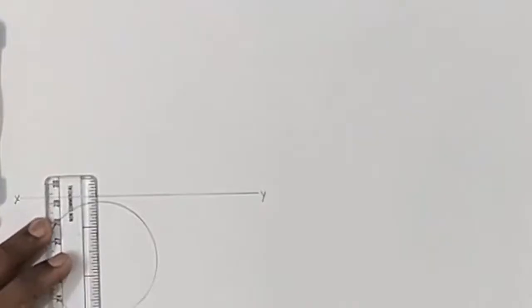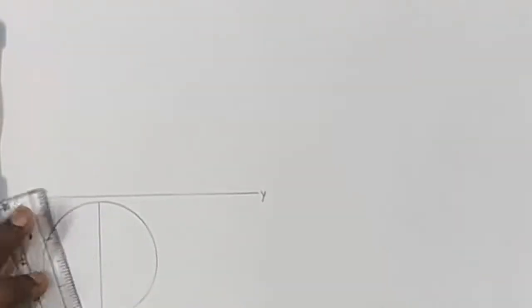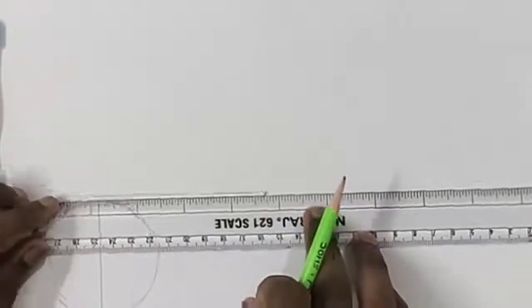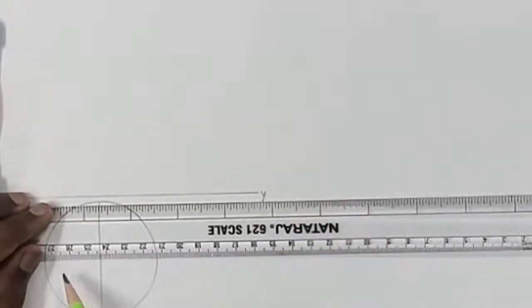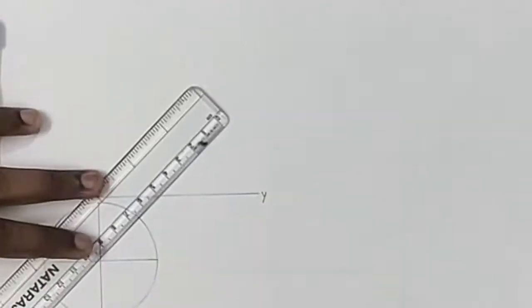And now divide this into 8 equal parts by drawing a vertical line, a horizontal line, and lines at 45 degrees.